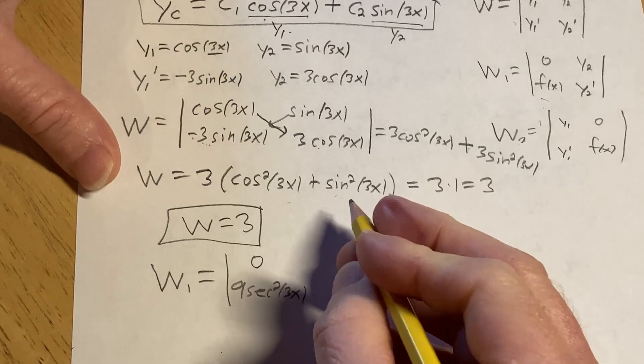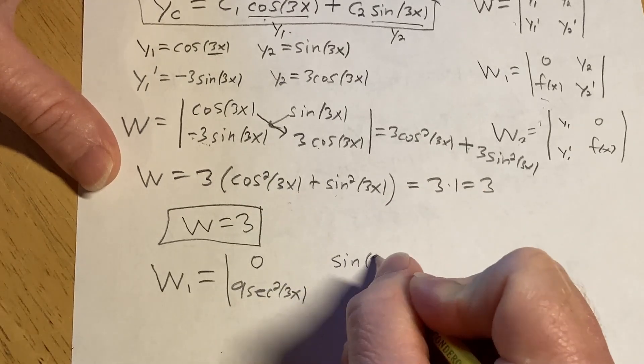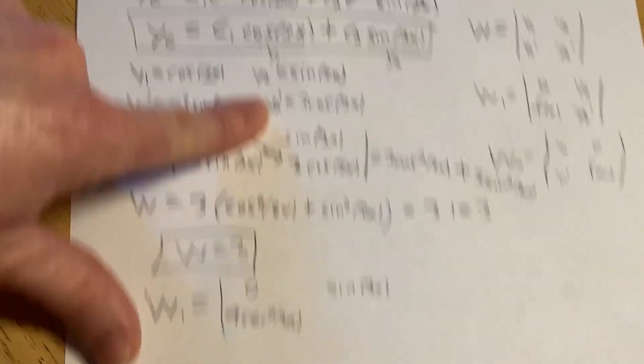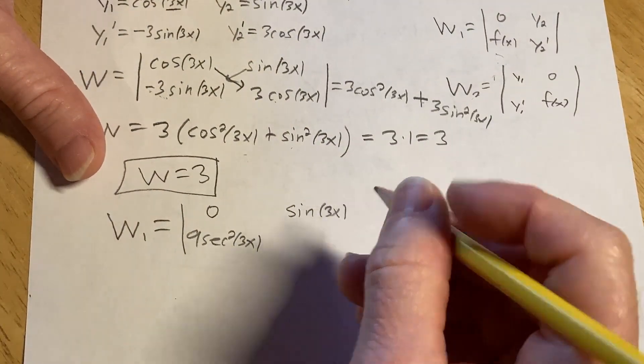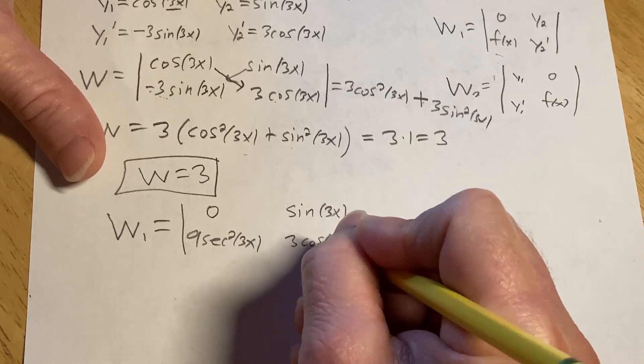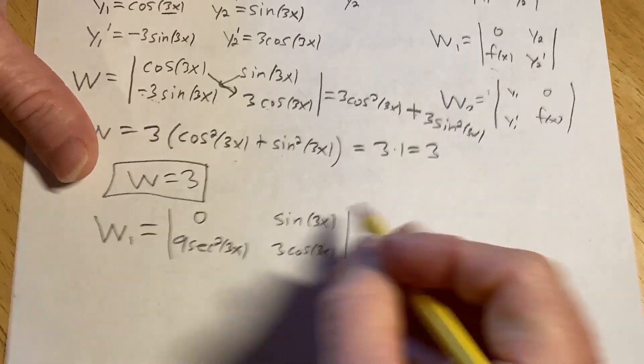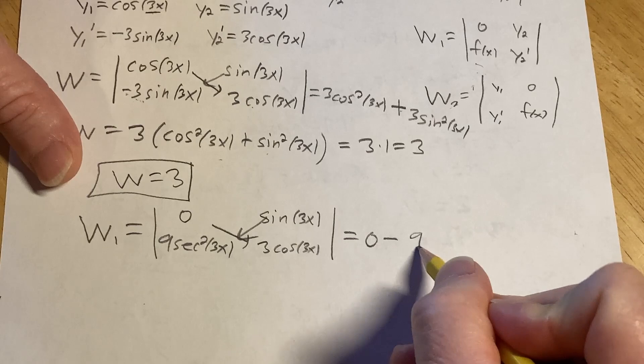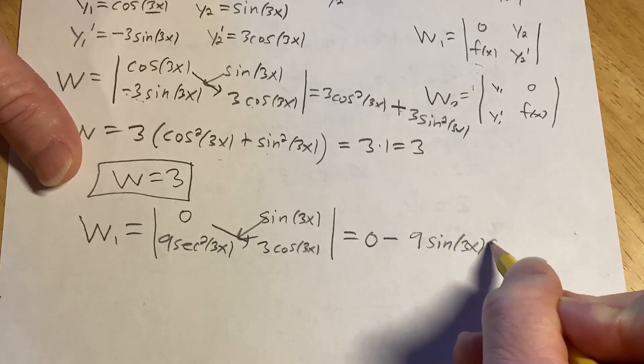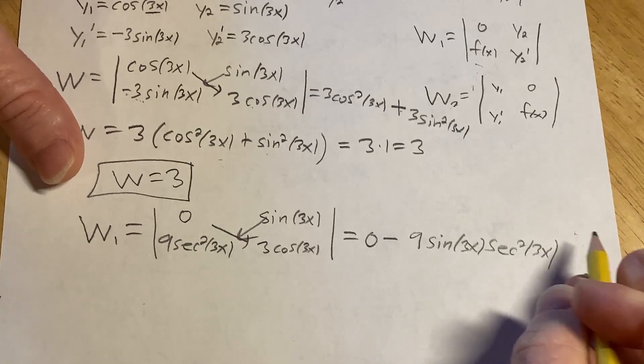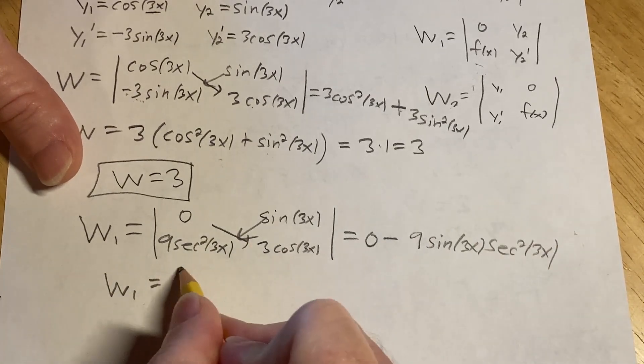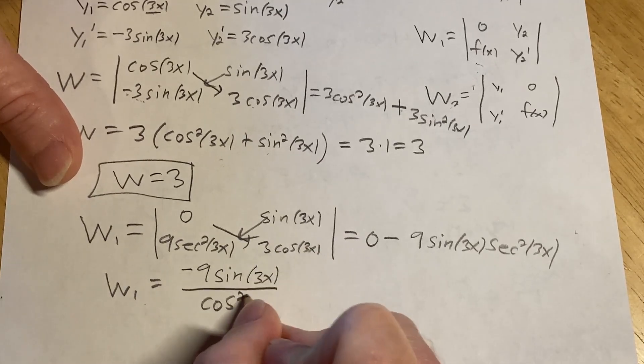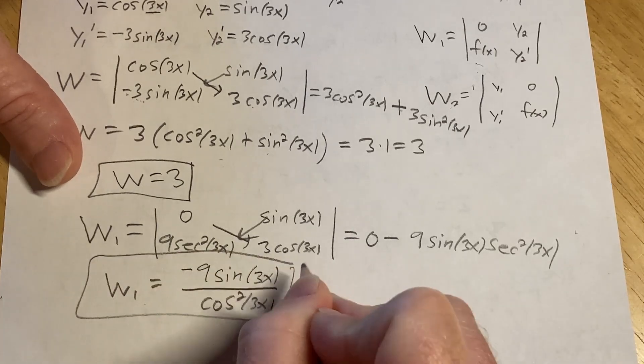So for w sub 1, it's going to be 0. And then our f of x was 9 secant squared of 3x. And then y sub 2 was sine 3x. And then y sub 2 prime, 3 cosine 3x. Multiply, you get 0. And then subtract and multiply. So it'll be 9 sine 3x secant squared 3x. So w sub 1, let's write it like this. Negative 9 sine 3x over cosine squared 3x.